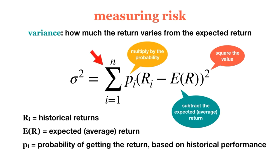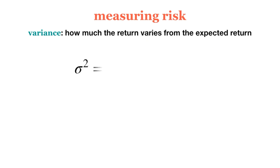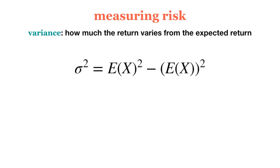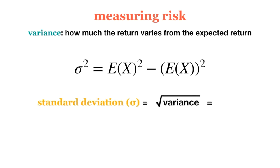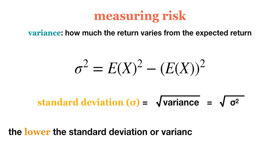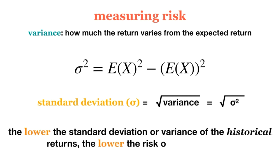We can also express this formula in an alternative form. We can take the square root of the variance to get our standard deviation. The lower the standard deviation or variance of an investment's historical returns, the less risky its returns are expected to be in the future. Investors prefer assets with a low standard deviation on their returns.